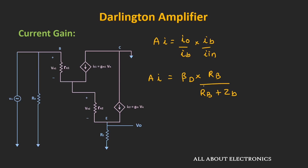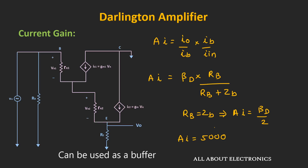When this Darlington pair is used as an amplifier, the value of base resistor Rb is higher or comparable to the base resistance. If we assume Rb equals Zb, then the current gain equals βd divided by 2. For example, if βd is 10,000, the current gain is still 5,000. So this amplifier provides high current gain. To summarize, this Darlington pair provides very high input impedance and low output impedance, very high current gain, and voltage gain close to unity. Because of these characteristics, this Darlington amplifier acts as a very good buffer at low and mid frequencies.